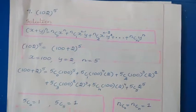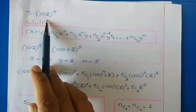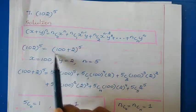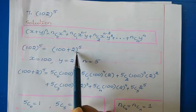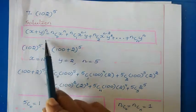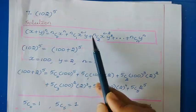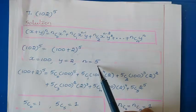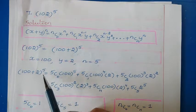Question number 7 is a similar question: 102 to the power 5. We write 102 as 100 plus 2, which is in the form of the binomial theorem x plus y to the power n with the plus symbol. Comparing, x is 100, y is 2, and n is 5. Now we write the expansion of 100 plus 2 to the power 5.